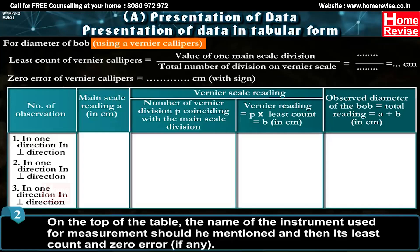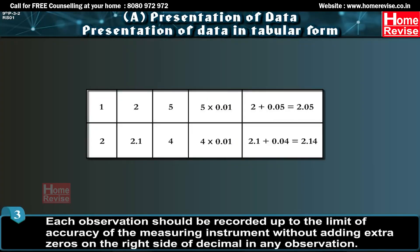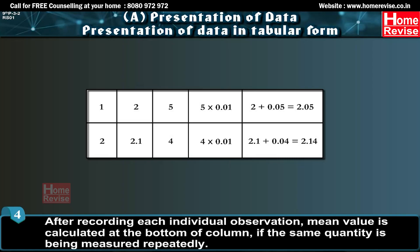Step two: On the top of the table, the name of the instrument used for measurement should be mentioned, and then its least count and zero error if any. Step three: Each observation should be recorded up to the limit of accuracy of the measuring instrument, without adding extra zeros on the right side of the decimal. If there is no digit before the decimal, a zero is put before the decimal to make it prominent. Step four: After recording each individual observation, the mean value is calculated at the bottom of the column if the same quantity is being measured repeatedly.